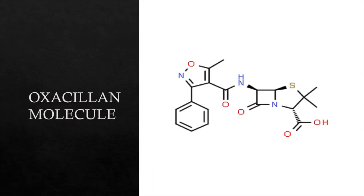This is Oxacillin's molecular shape. As you can see, it has 19 carbon, 19 hydrogen, 3 nitrogen, 5 oxygen, and 1 sulfur.